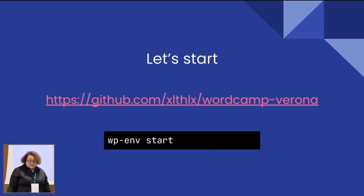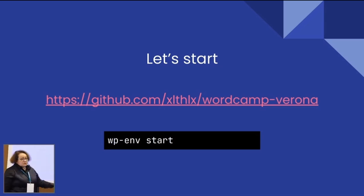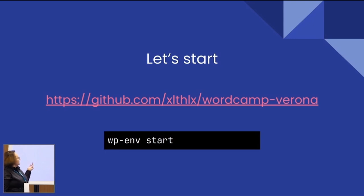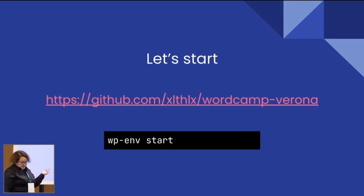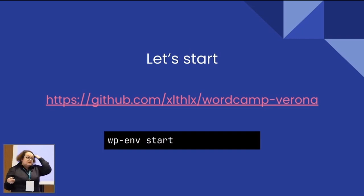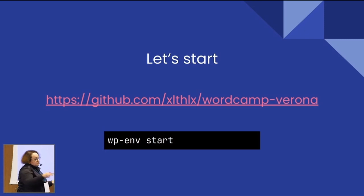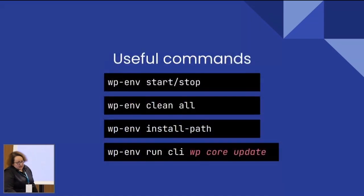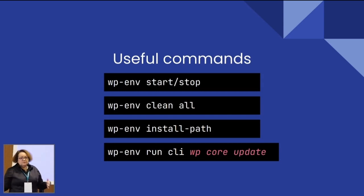So how do you use that? Let's say you clone or download this repository. You have to use a terminal, a command line — any command line — and type 'wp-env start', and that starts the environment. It takes a little time because what this does, essentially, is download all the Docker images with WordPress, PHP, MySQL, whatever you need to start a local environment. So, you use 'wp-env start' and of course 'wp-env stop' to stop the environment.